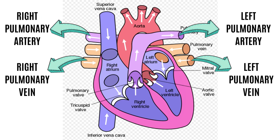Next, we will look at the pulmonary arteries. The word pulmonary means lungs and artery is the blood vessel that brings blood away from the heart, so pulmonary artery brings blood away from the heart to the lungs. However, a point to remember is that this is the only artery that brings deoxygenated blood.